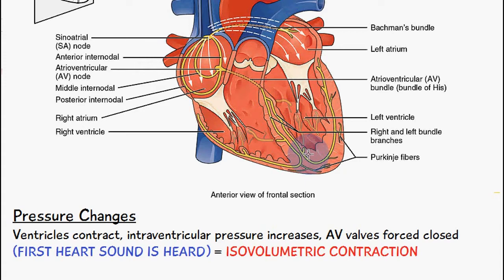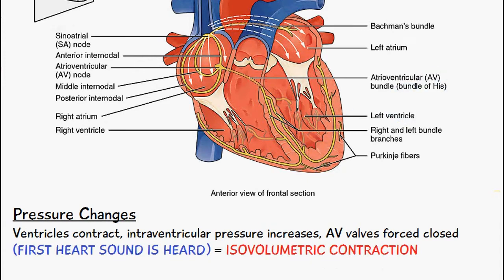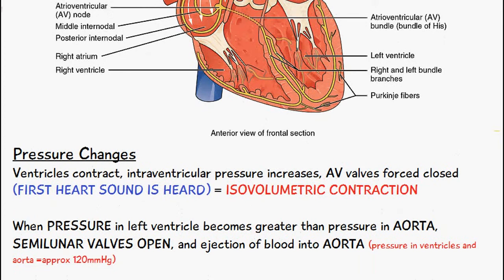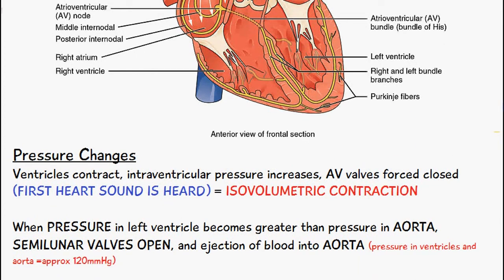This phase is known as isovolumetric contraction. Then following on from this, we look at when the pressure in the left ventricle changes.